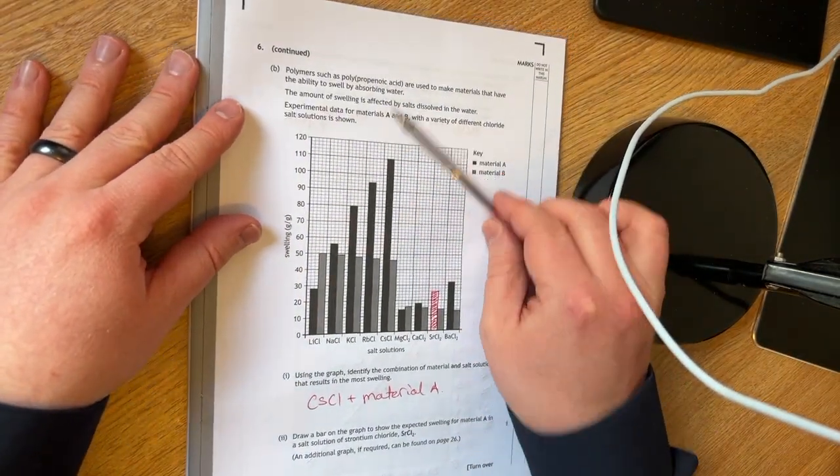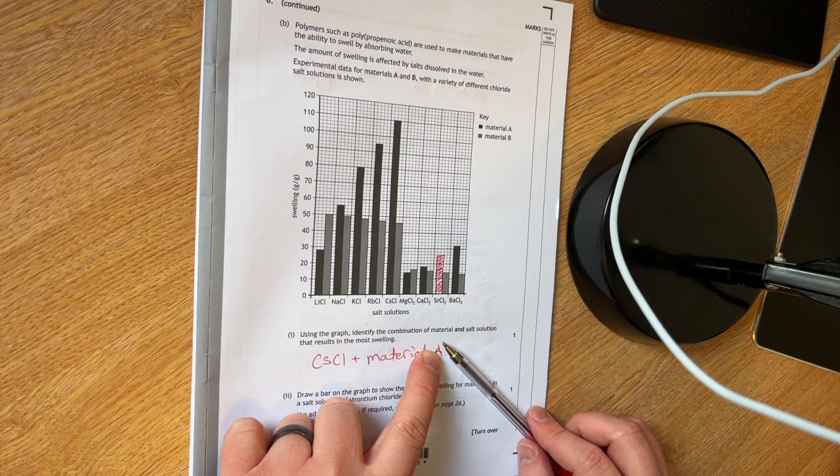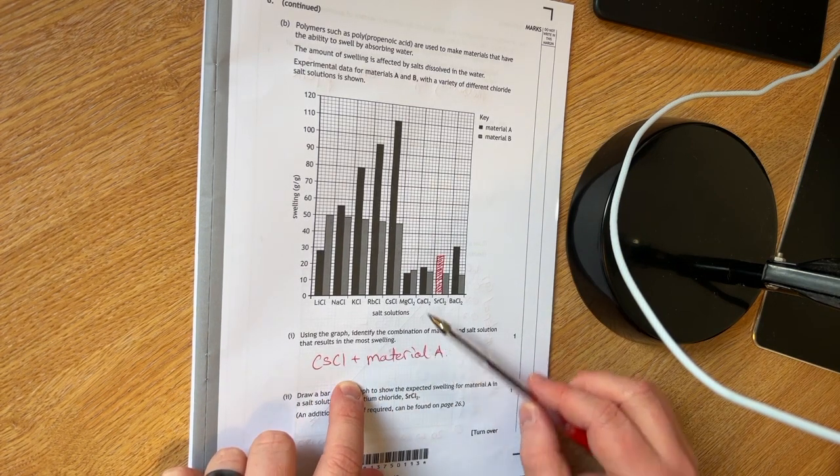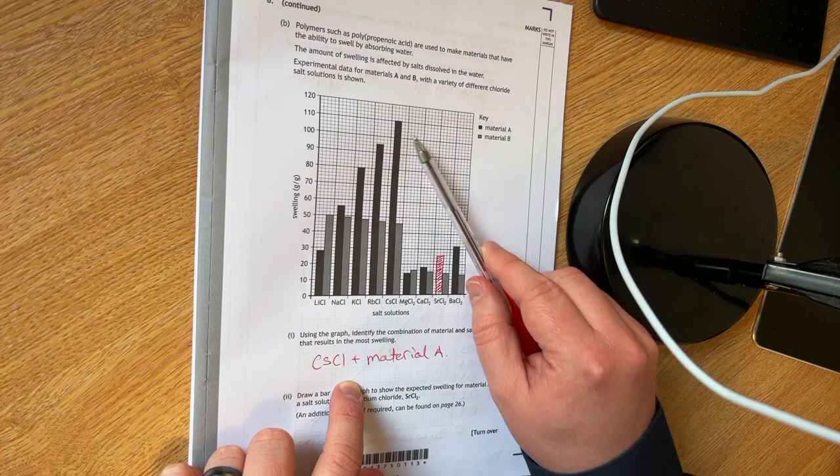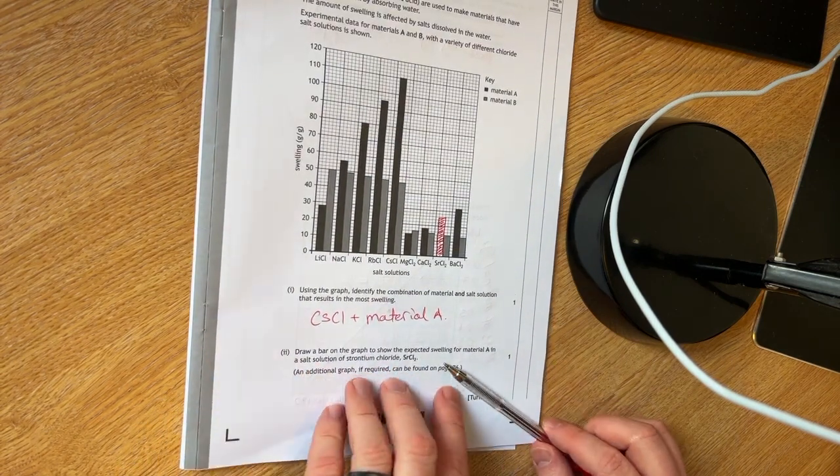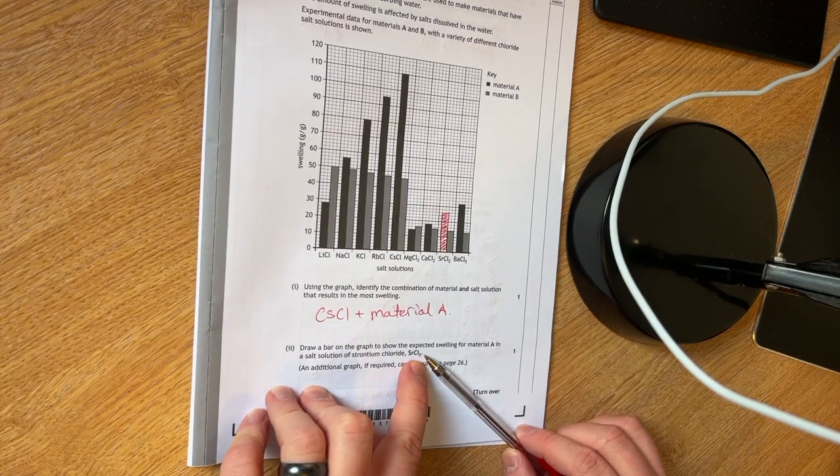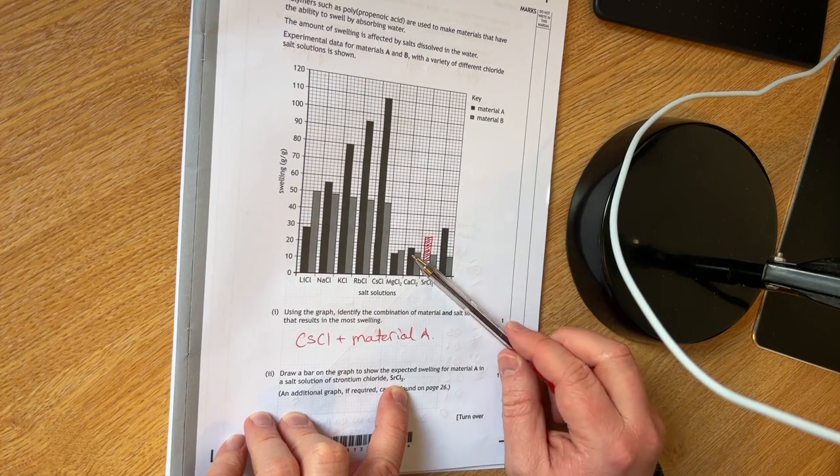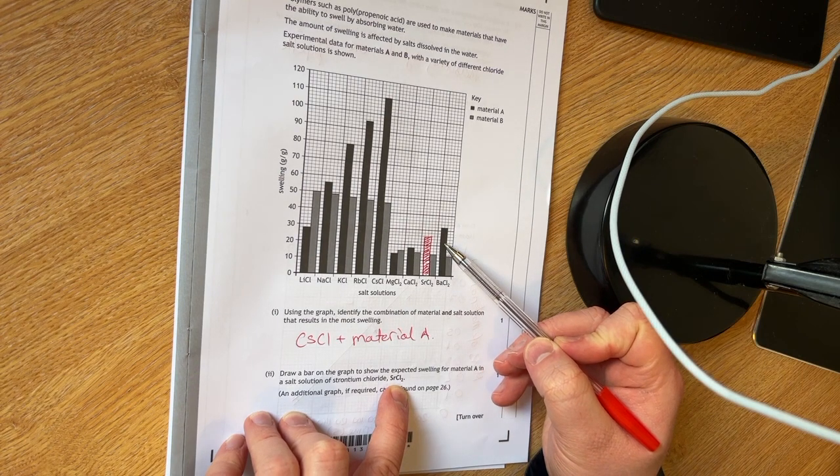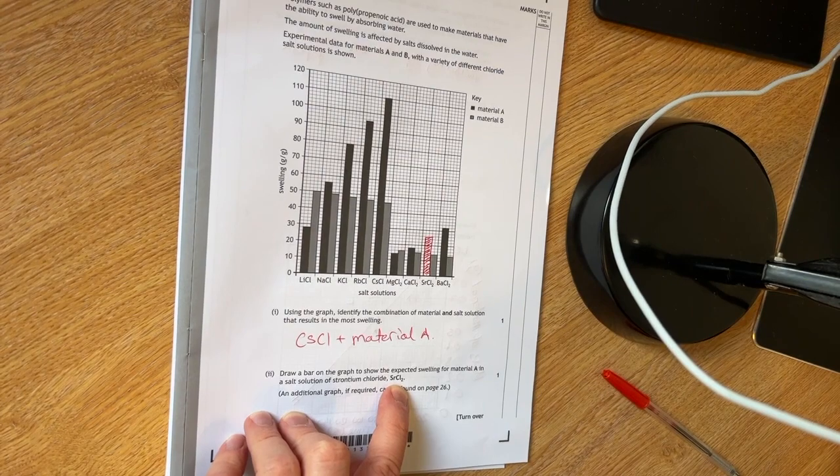There's a whole lot of information here. Using the graph, you have to identify the combination of material and salt solution that results in the most swelling. That is going to be material A and cesium chloride. You have to draw a bar on the graph to show the expected swelling for material A in a salt solution of strontium chloride SrCl2. I think this is going to be in the middle. It's increasing as we're going down group two. So I suspect it's going to be in the middle.